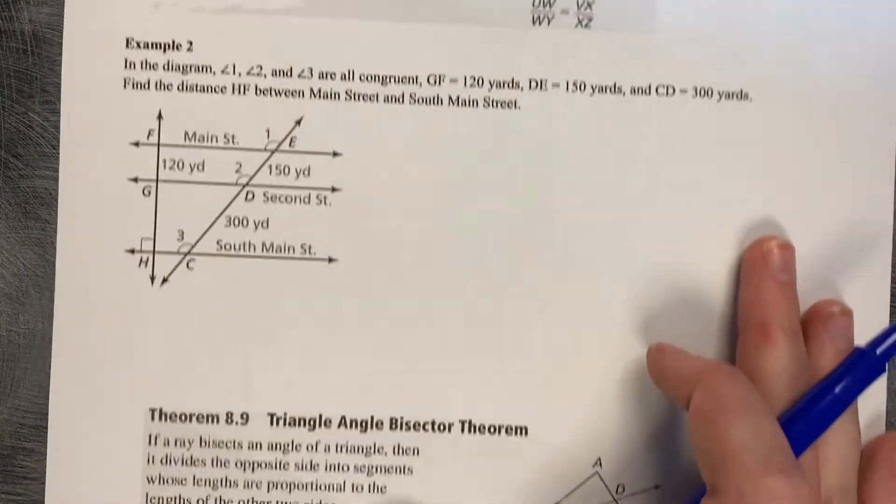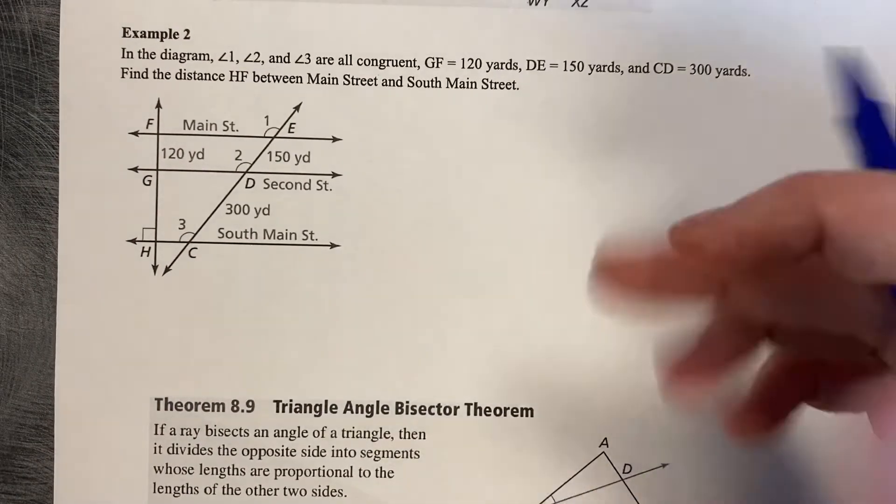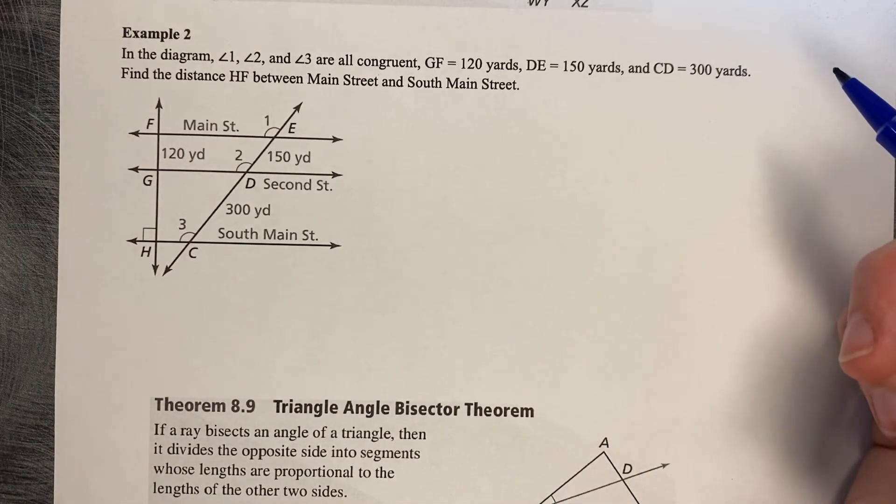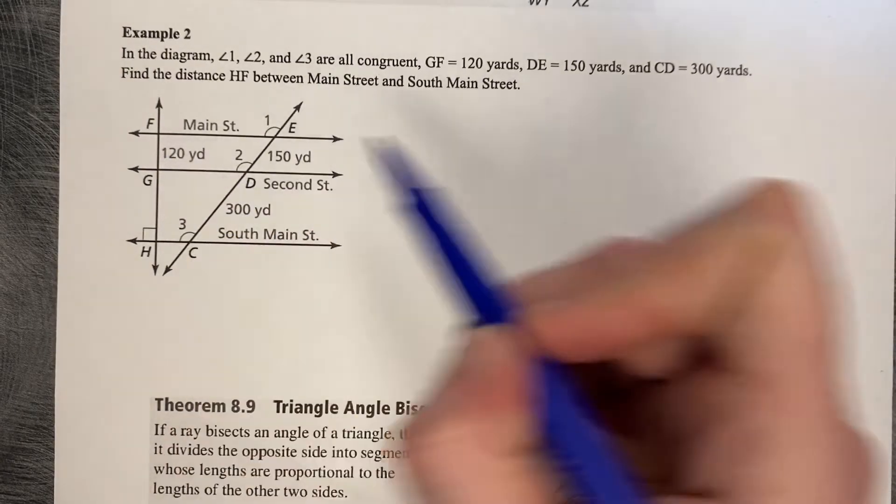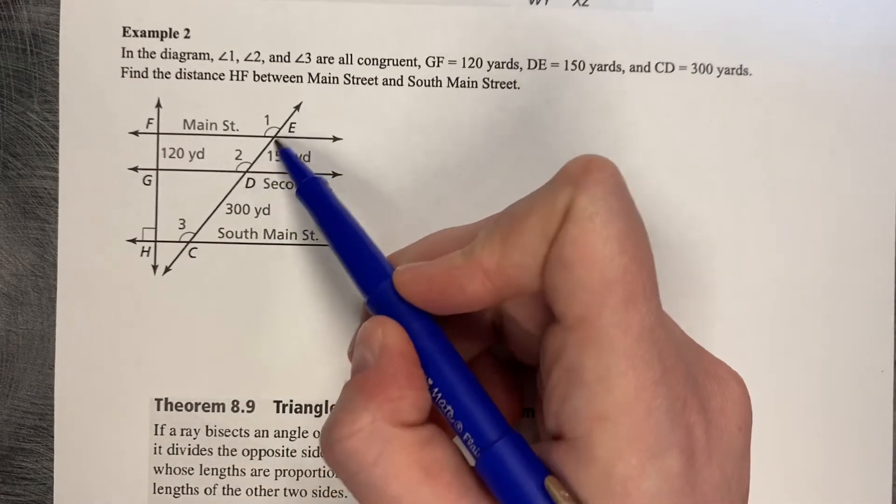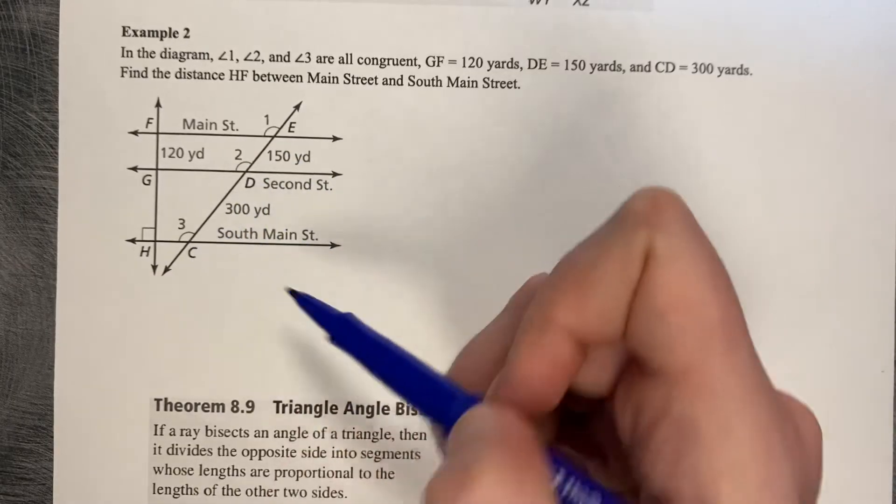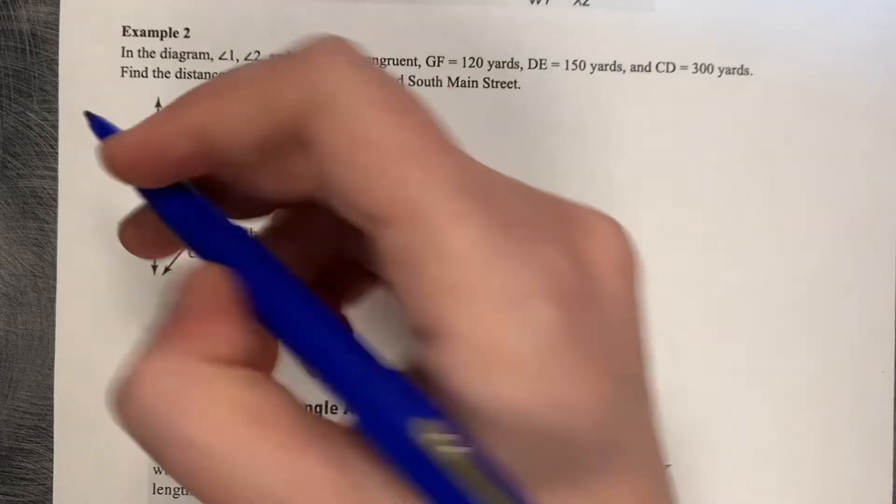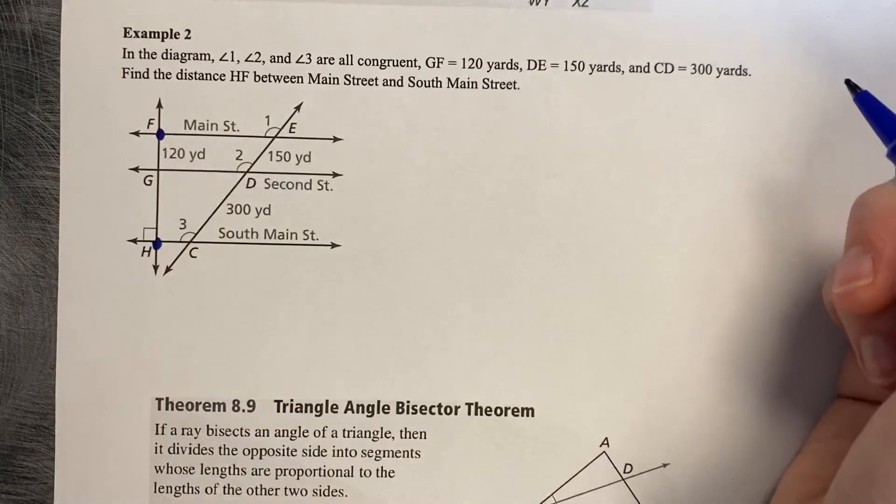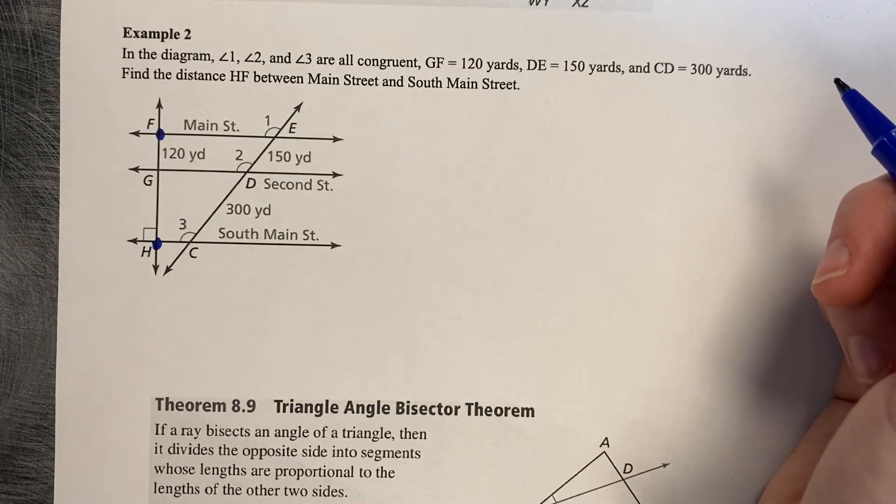Let's try one. In the diagram, angles 1, 2, and 3 are congruent. GF is 120 yards, DE is 150 yards, and CD is 300 yards. Find the distance H to F between Main Street and South Main Street.